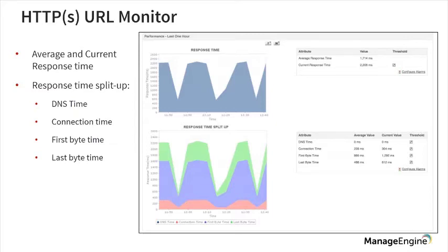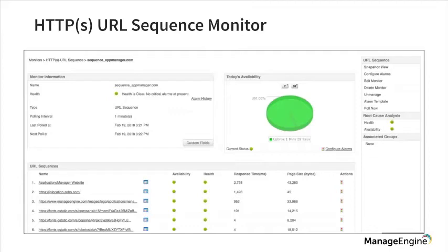The URL sequence monitor allows users to monitor a sequence of URLs. This sequence could be anything from a user's typical navigational flow throughout your website. The entire sequence can be captured with the help of the URL sequence monitor, which runs with the help of a recorder tool. You install and run the recorder tool to capture the URL sequences, and each particular URL in the sequence is added as a monitor. You can then track the response time, the page size, and the transactional response between different URLs in the sequence.